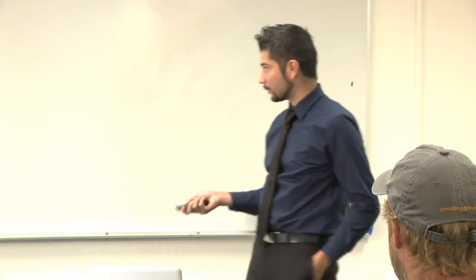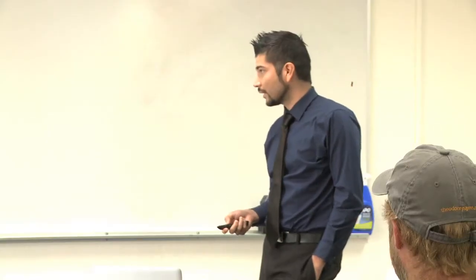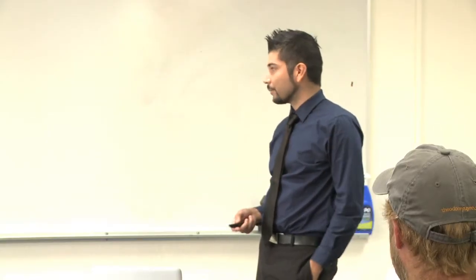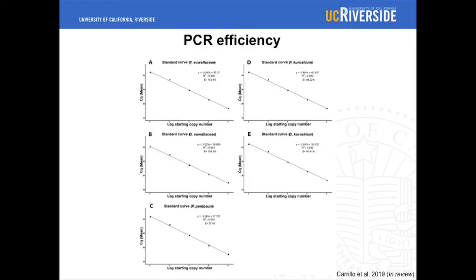We did this for the other symbionts as well — I just want to show this as an example. We also used some negative controls from fungi we often find in submitted samples to make sure we're not getting any false positives. The hydrolysis probes were PrimeTime probes. This shows evidence of our PCR efficiency — all the targets had efficiency values over 85%, which is ideal for these real-time PCR reactions.